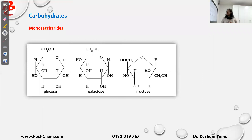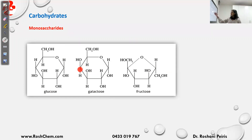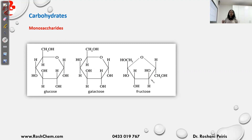Now we look at carbohydrates. We have three types: monosaccharides, disaccharides, and polysaccharides. Monosaccharides are the simplest carbohydrates with just one unit — we have glucose, galactose, and fructose. If you count the carbons, hydrogens, and oxygens, they all have the formula C6H12O6. Because they all have the same molecular formula but three different structures, they are isomers. They are also highly soluble in water because they have many OH groups which can make hydrogen bonds with water.